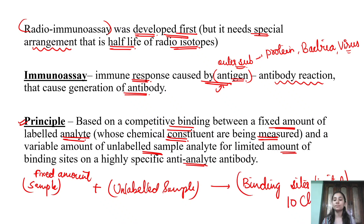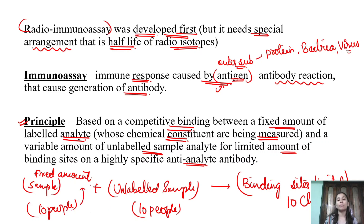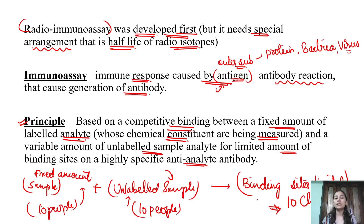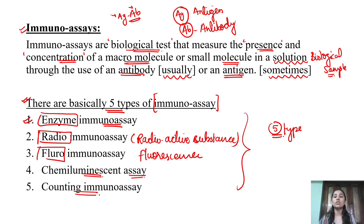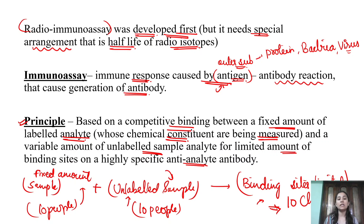To understand: if you have 10 chairs and 10 unlabeled people here, plus 10 labeled people — that's 20 people for 10 chairs. Either labeled or unlabeled samples can sit in those 10 chairs. From this, you can analyze and know the concentration, as well as the presence and absence, through these antigen-antibody binding site interactions.